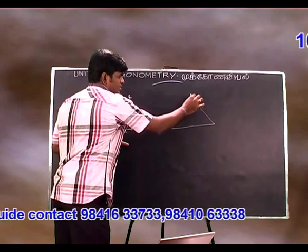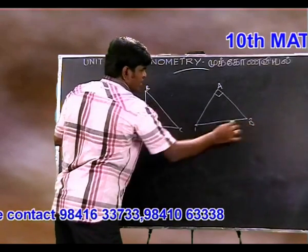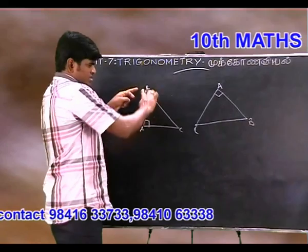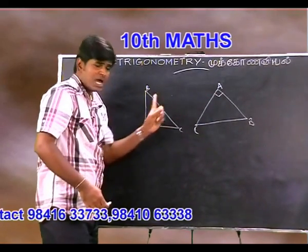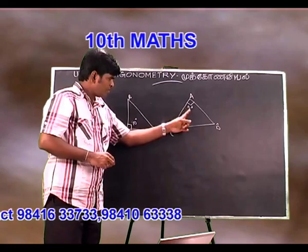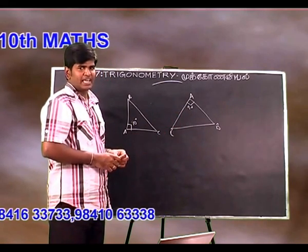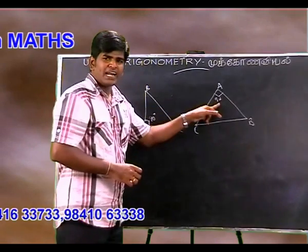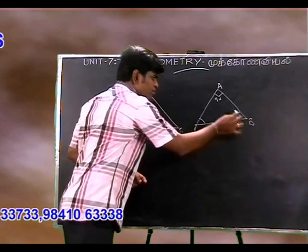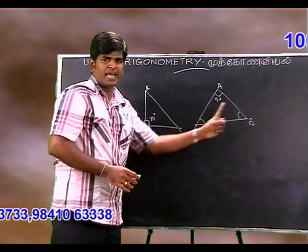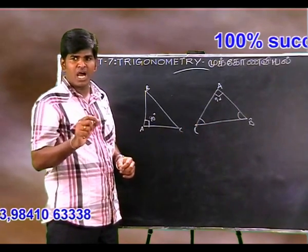So A is here, B and C are the other corners. This corner is 90 degrees, then it is the right angle triangle. If there is a right angle corner, there are two other acute angle corners.